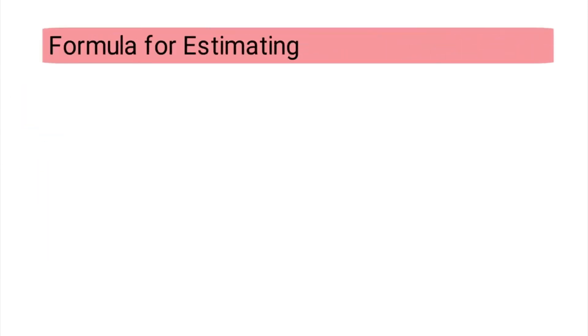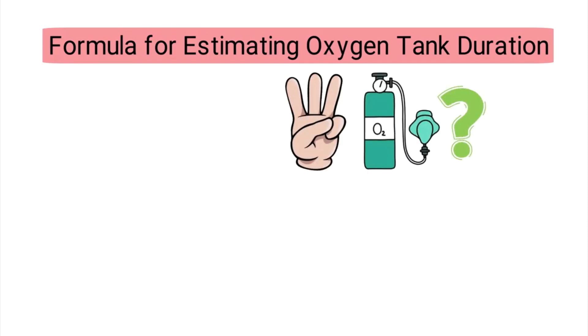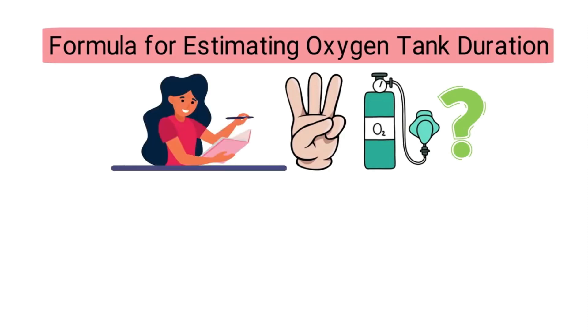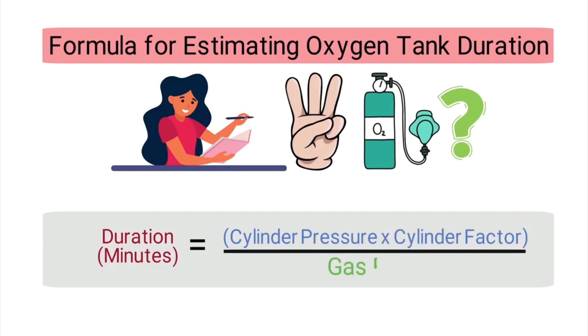Now that we know the three main factors that dictate how long an oxygen tank will last, we can put them into a simple formula to calculate the duration. The formula is as follows: the duration in minutes is equal to the cylinder pressure times the cylinder factor, divided by the gas flow. We already mentioned the pressure and the flow, so now we need to talk about the cylinder factor.